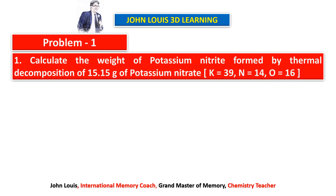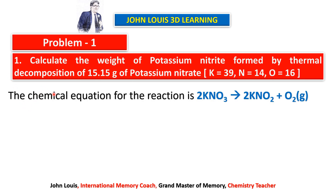Problem number one: calculate the weight of potassium nitrite formed by thermal decomposition of 15.15 grams of potassium nitrate. When potassium nitrate is decomposed, potassium nitrite is formed and we need to find out the weight. The chemical equation for the reaction is 2KNO₃ → 2KNO₂ + O₂ under heat.